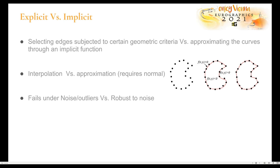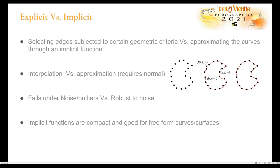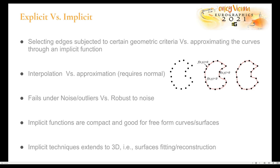Some explicit reconstruction techniques add an extra post-processing step to get rid of noise, but this is not an inherent property of explicit techniques. Implicit functions are compact, which is good for representing free-form curves and surfaces, though it is difficult to define such a function. Once obtained, it's a really compact and good representation. Most implicit techniques also extend naturally to 3D and are discussed as a proof of concept in the context of 3D surface reconstruction.